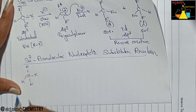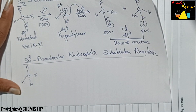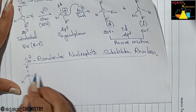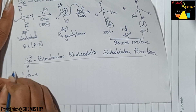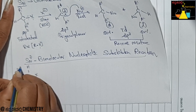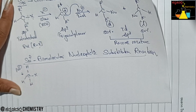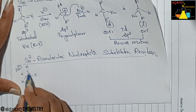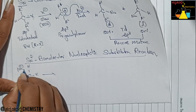In the SN2 reaction, the substrate considered is primary alcohol or primary alkyl halide. The nucleophile can attack the substrate simultaneously while the C–X bond is breaking — the nucleophile attack and C–X bond break happen at the same time.